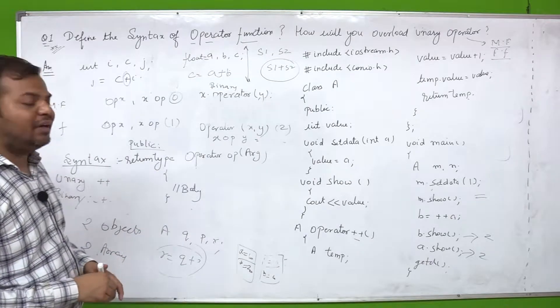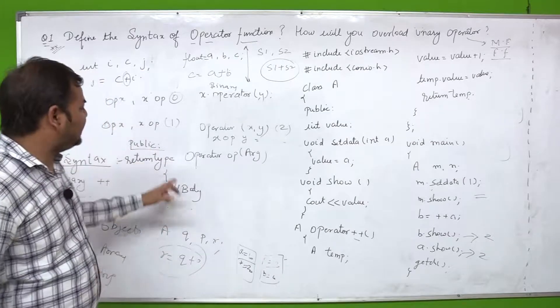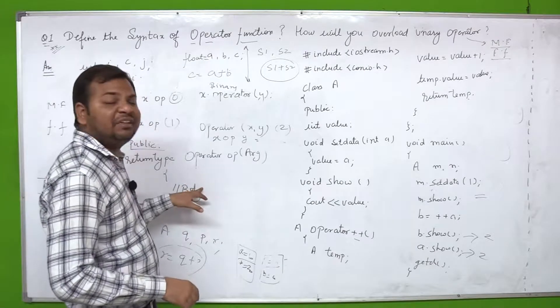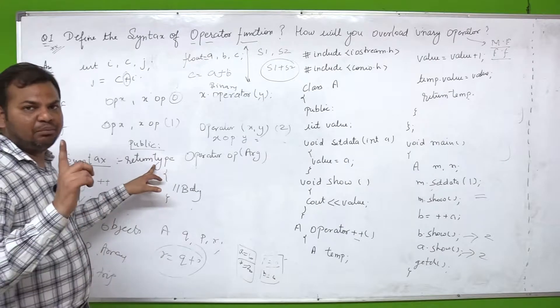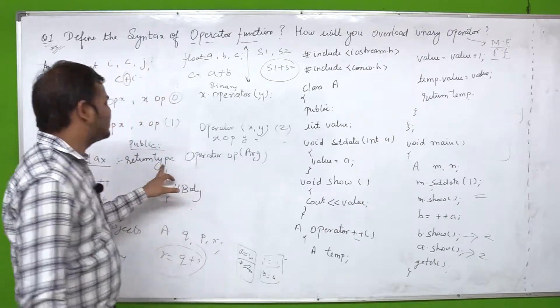What is return type? If this function is not returning anything, then here comes void. If it's returning integer then int, if returning float then float. In case if this function returns an object, then here comes class name. Very important point - if this function returns object, then here comes class name.